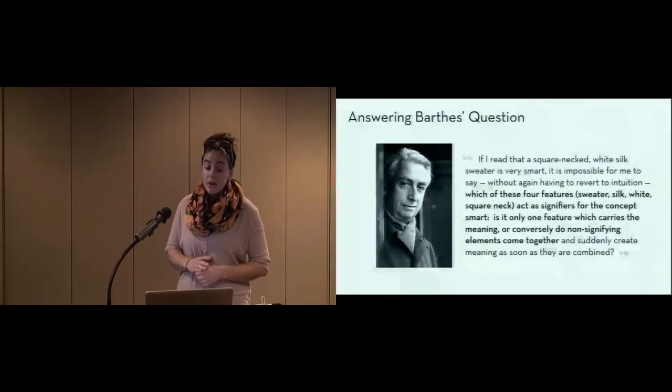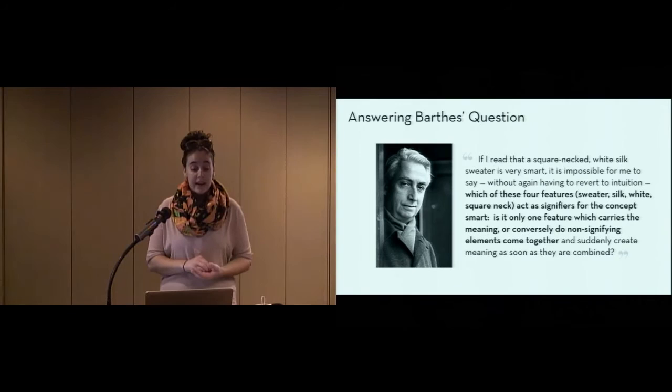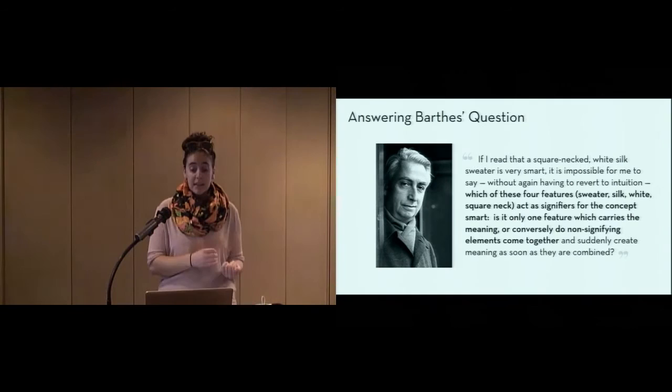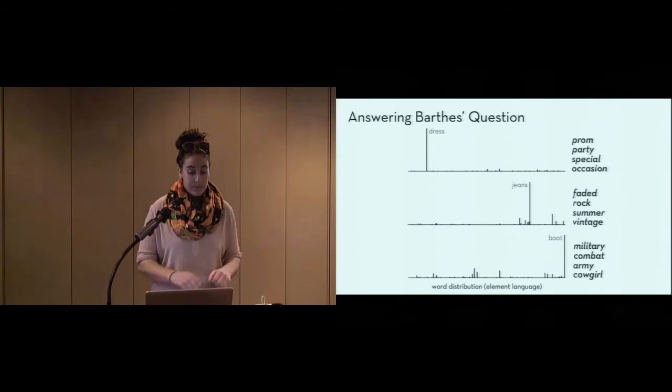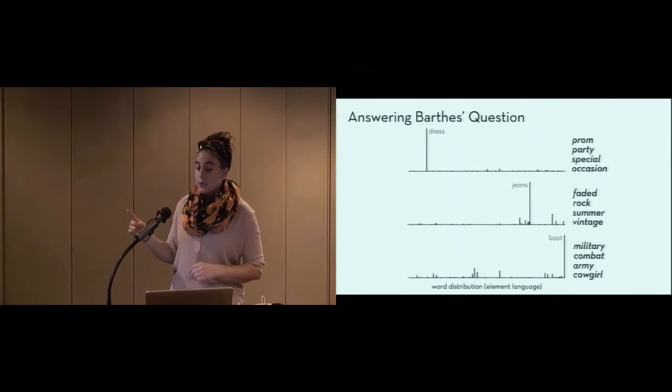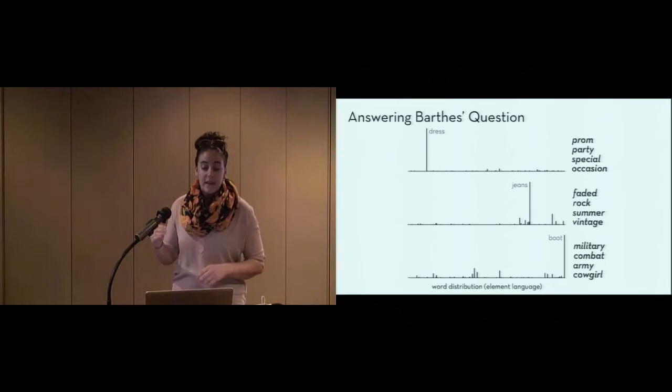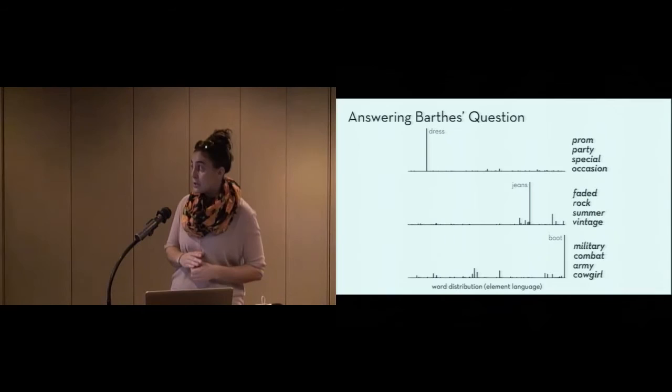With the model trained with 35 topics, we can now answer Barthes' question, both where he asks which design elements signify different styles, but also where he asks whether it's one word alone that is signifying the style, or whether many must come together to signify that style. Naturally, we can find which words are important for different styles. So, considering the word distribution for a special occasion topic, which is the top row, we find that dress is the most important element, for a faded rock concept, jeans are most important, and for a military topic, boots are most important.